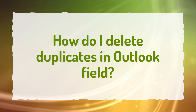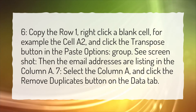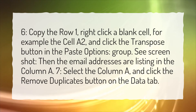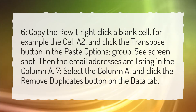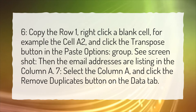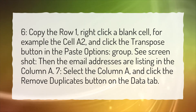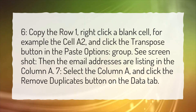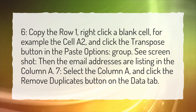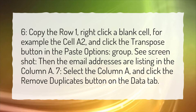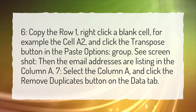How do I delete duplicates in Outlook? Copy row 1, then right-click a blank cell — for example, cell A2 — and click the Transpose button in the Paste Options group. The email addresses will then be listed in column A. Select column A and click the Remove Duplicates button on the Data tab.